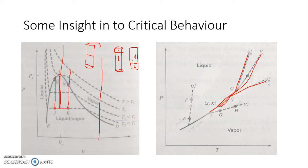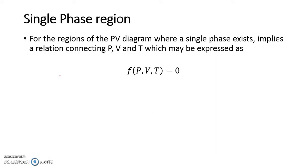So we have discussed the PV diagram and critical behavior, including how to find critical properties, up to this point. When we meet next time, we will talk about the single-phase region, the generation of the equation of state for the liquid phase, and then discuss real equations of state. Thank you.